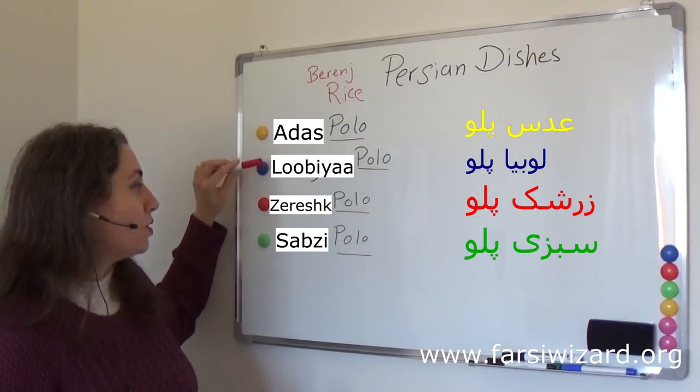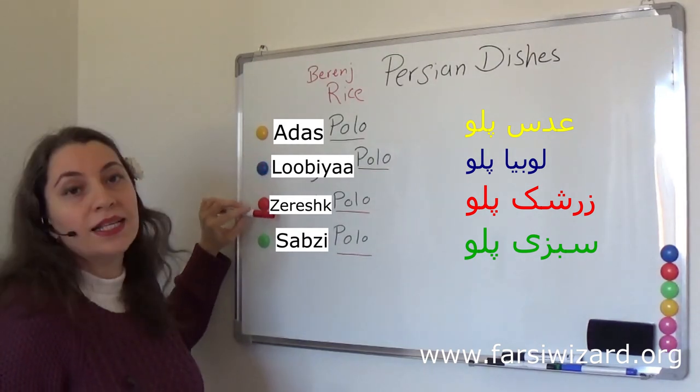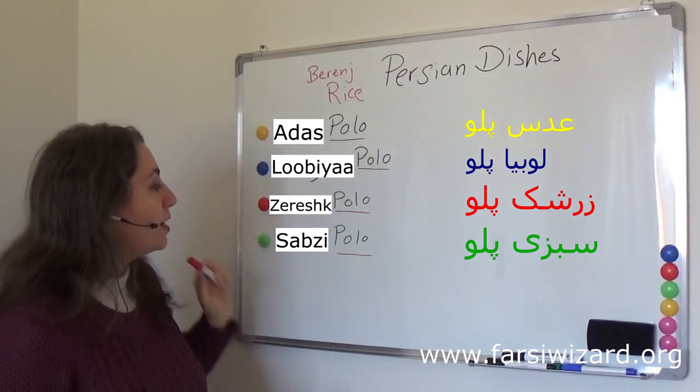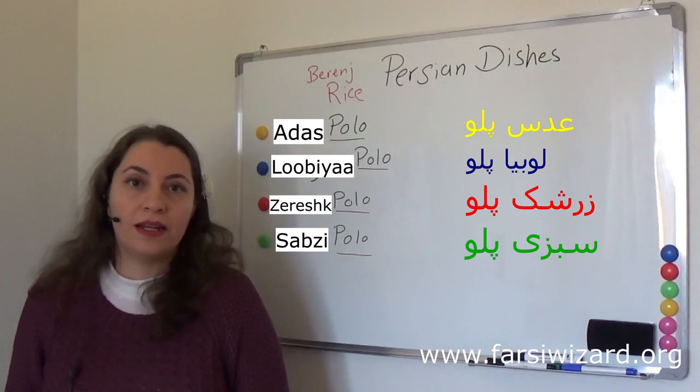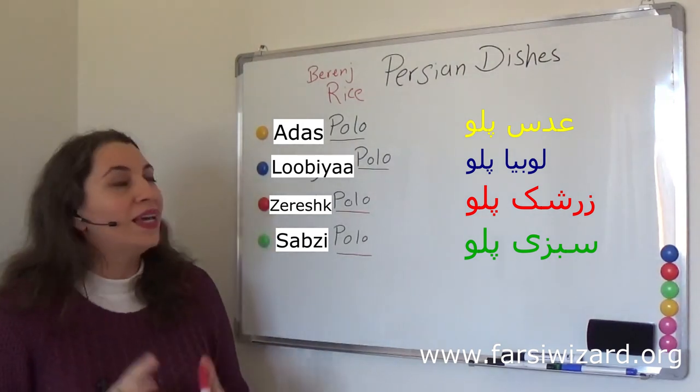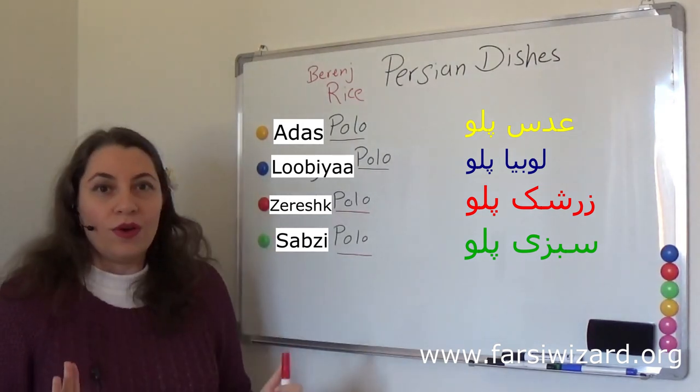So one more time to review everything: adas polo is lentil rice, lubia polo is rice with green beans or string beans, zereshk polo is barberry rice, and sabzi polo is herb rice.